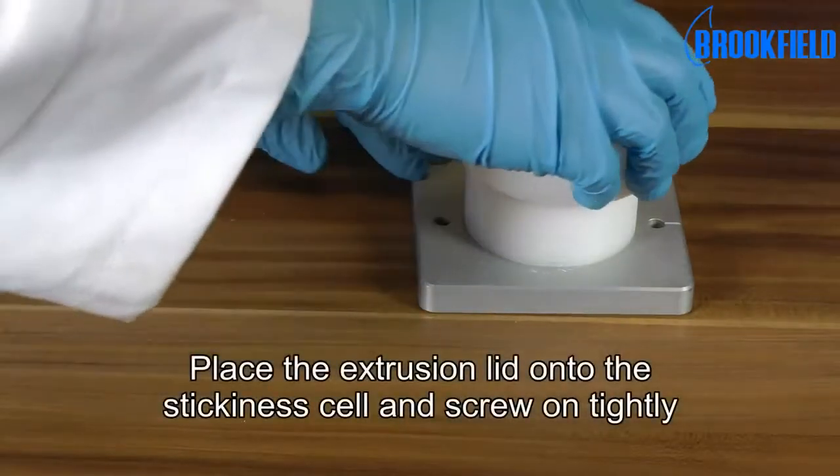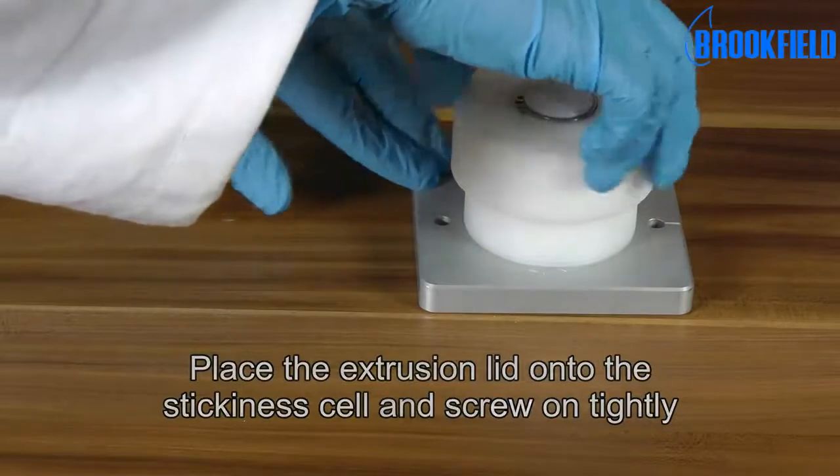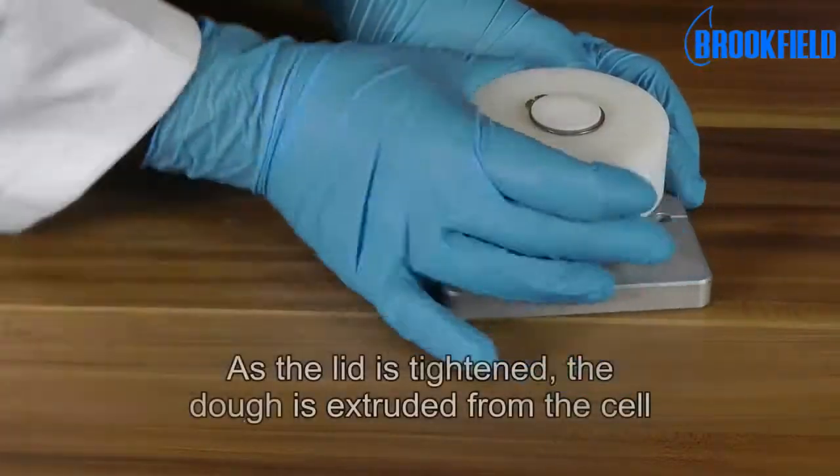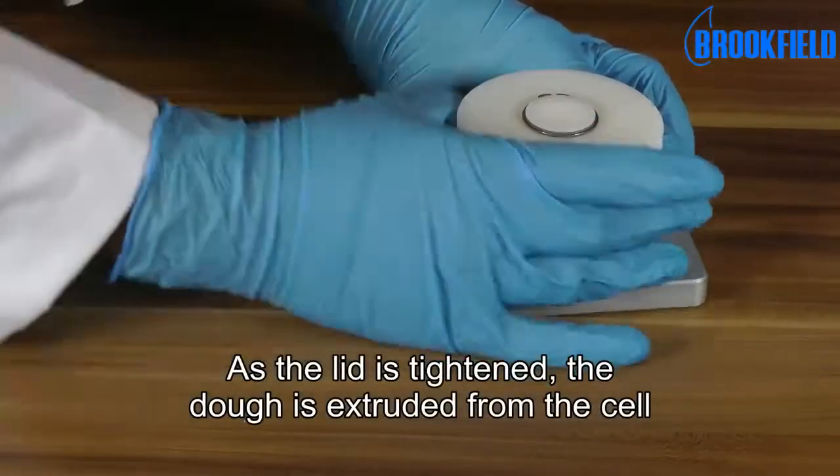Place the extrusion lid onto the stickiness cell and screw on tightly. As the lid is tightened, the dough is extruded from the cell.